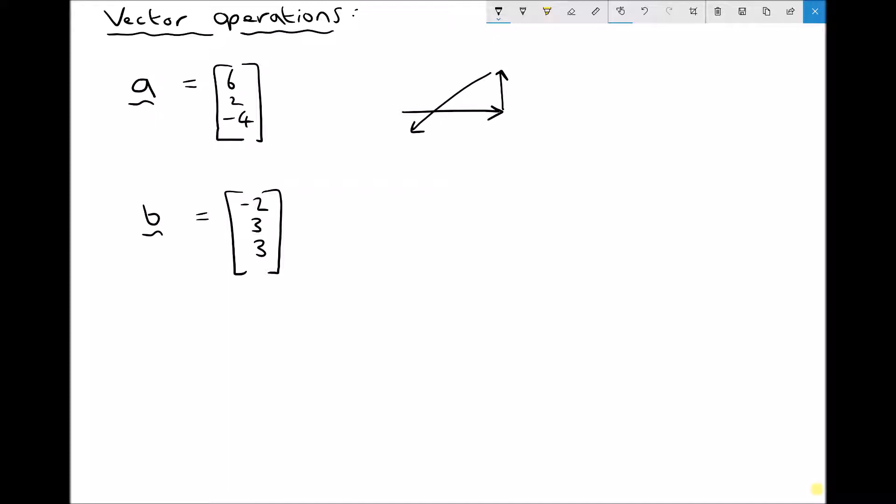But what we don't know is we don't know the start and end point. If the start point had been A and the end point had been B, then we could just as easily have written this vector as AB as we did previously.